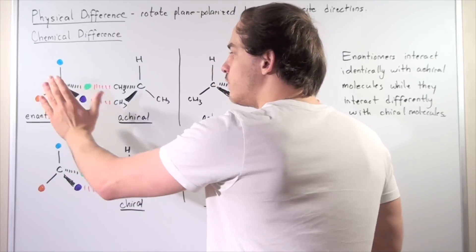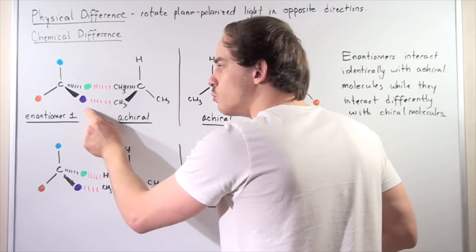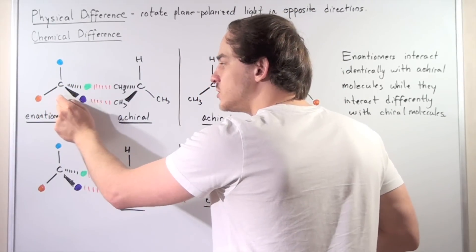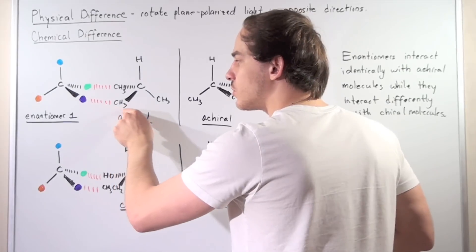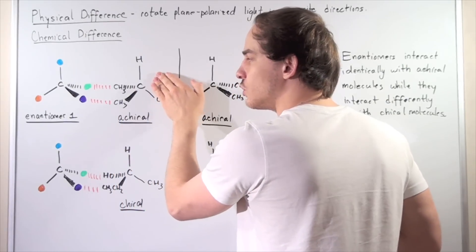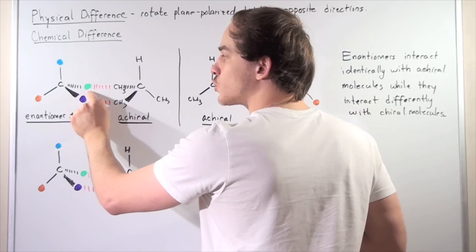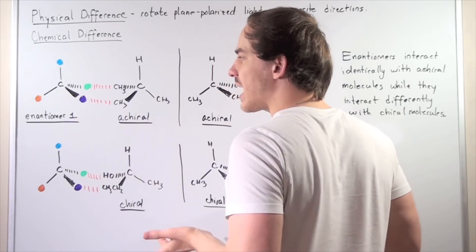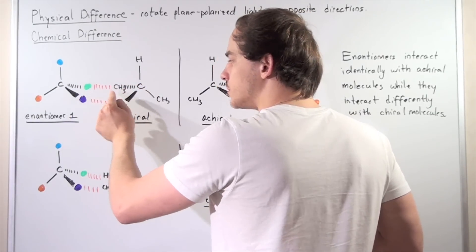Let's see how these two molecules interact. If we place them this way, we have the purple group of this enantiomer interacting with the methyl group of this achiral molecule, and likewise we have the green group interacting with a methyl group.